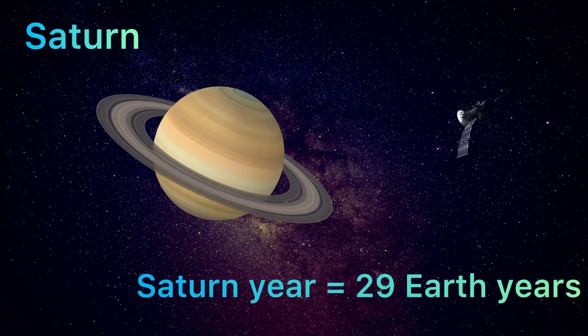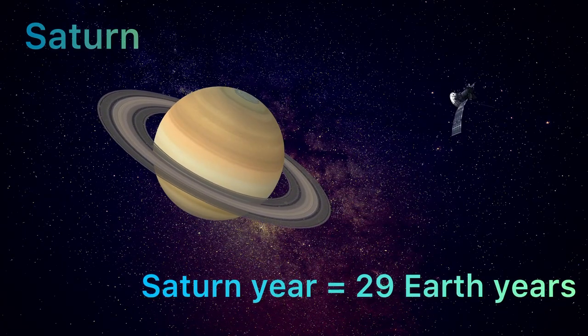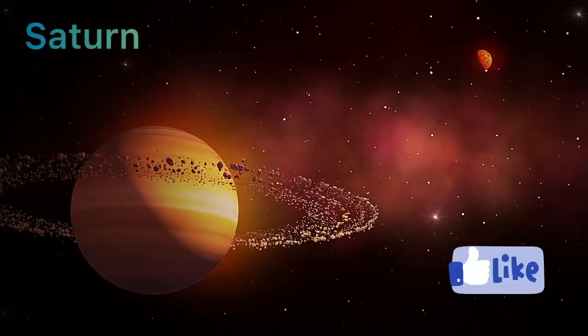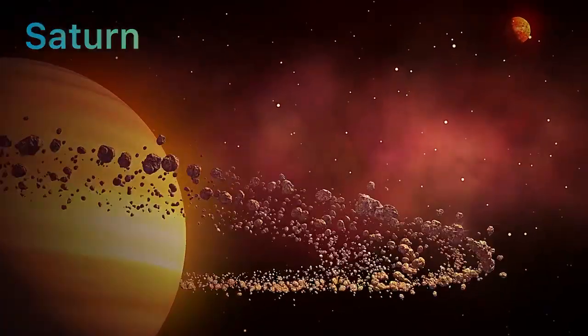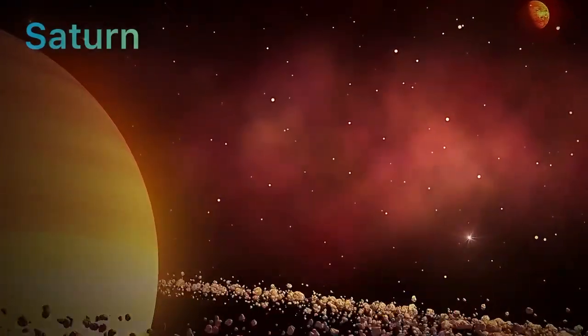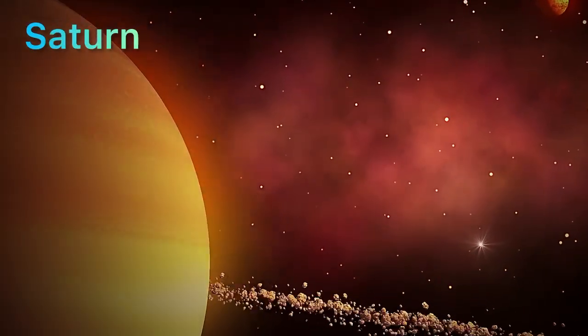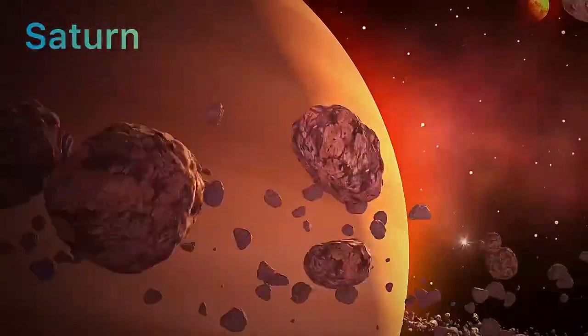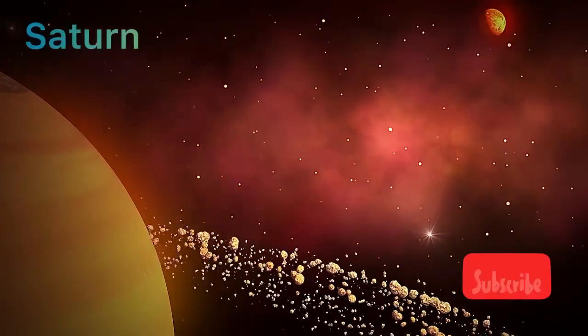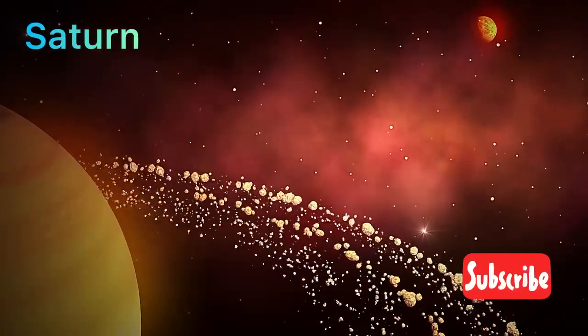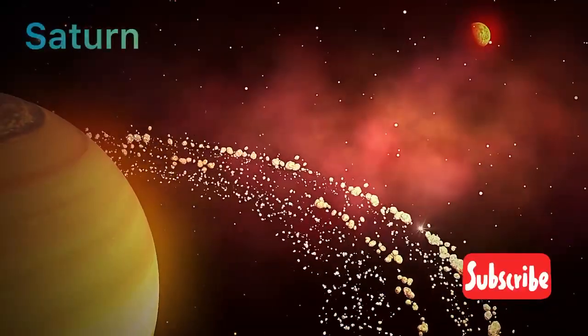And one year on Saturn is 29 years on Earth, because it takes 29 years to complete one trip around the Sun. So if you lived there, you'd celebrate your birthday only once every 29 years.